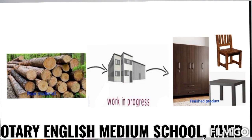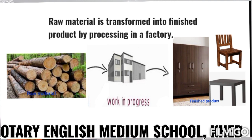So what is the exact meaning of finished product? Raw material is transformed into a finished product by processing in the factories. That is known as finished product.